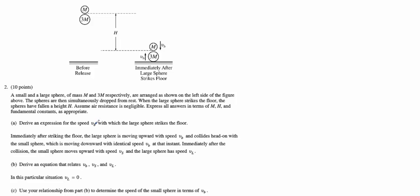In this problem we have a small object that has mass big M, and a larger object three times that value, dropped simultaneously from rest. When the large one strikes the floor, it has fallen a height of H. We are going to ignore any effects of air resistance, and we want to put all of our answers in terms of M and H and any fundamental constants.